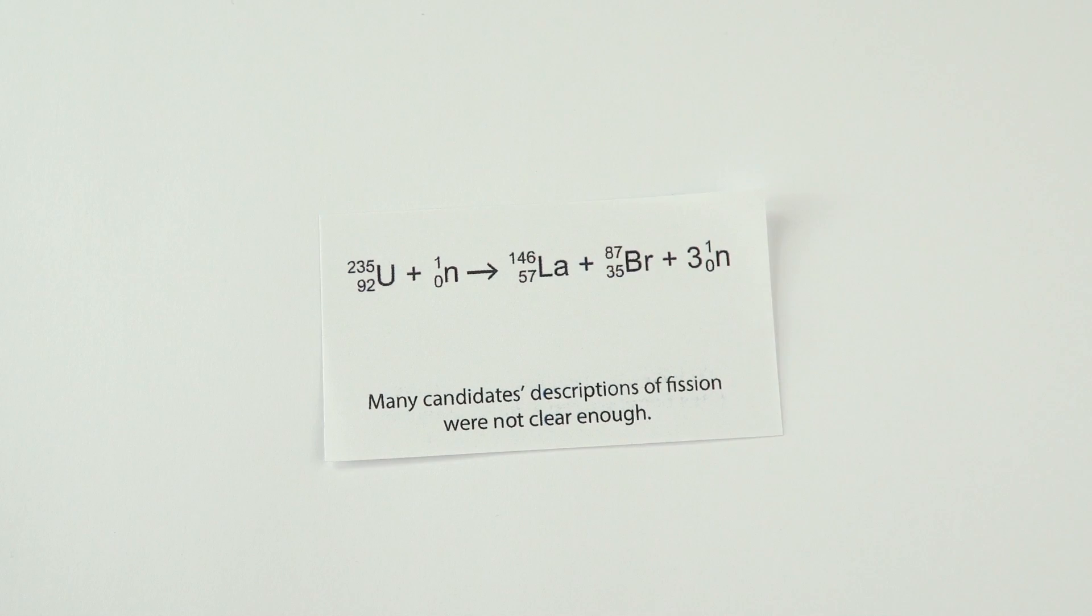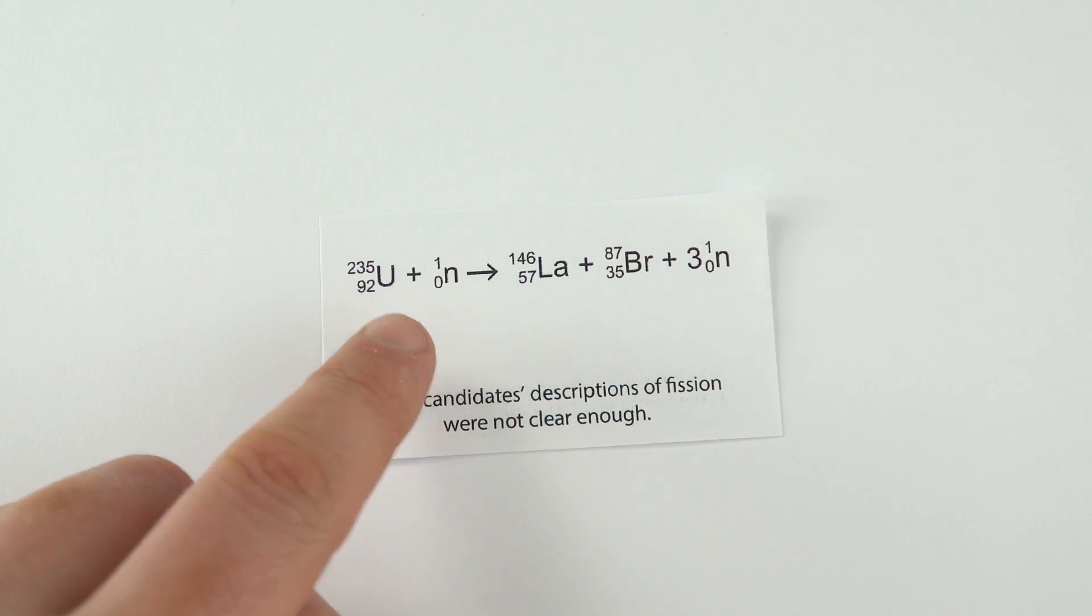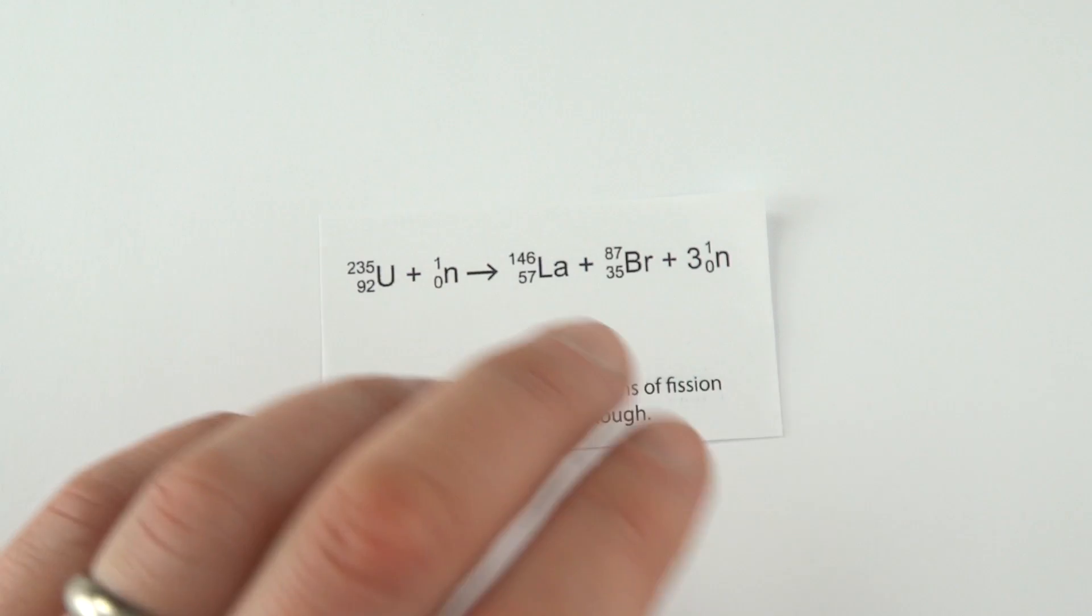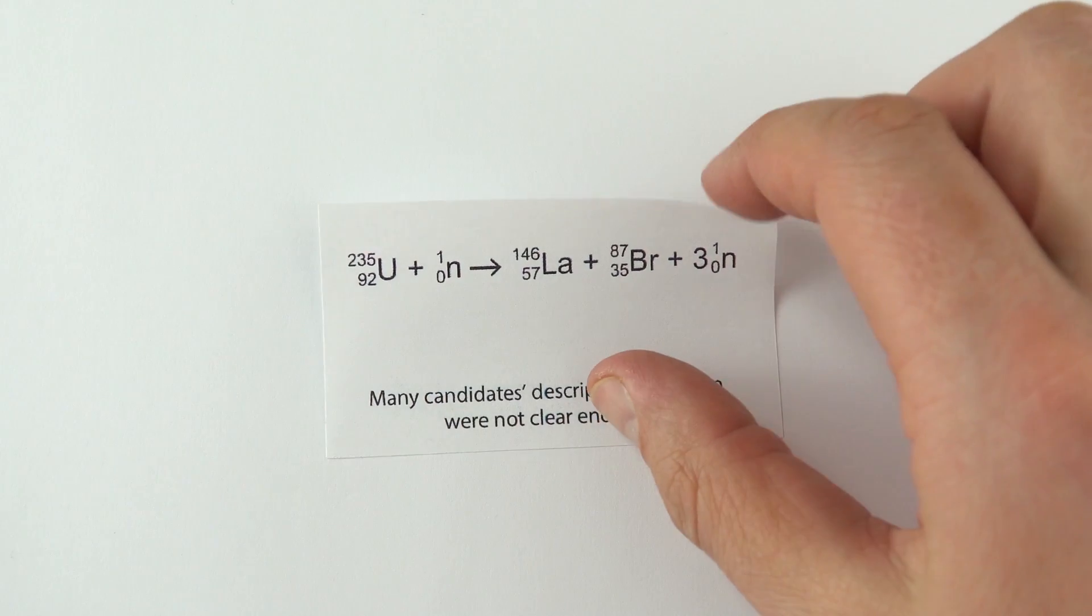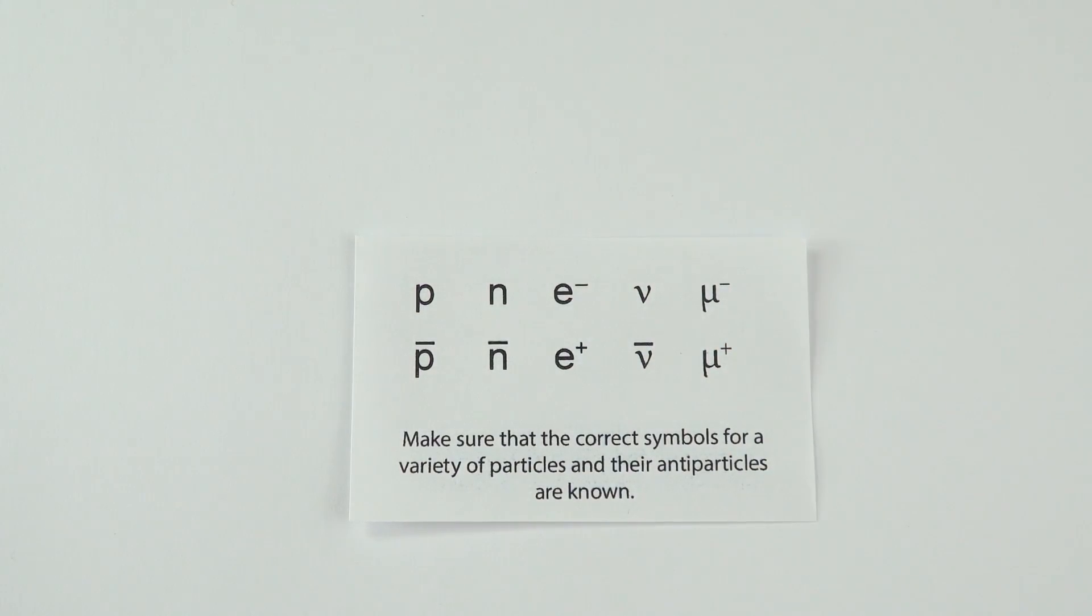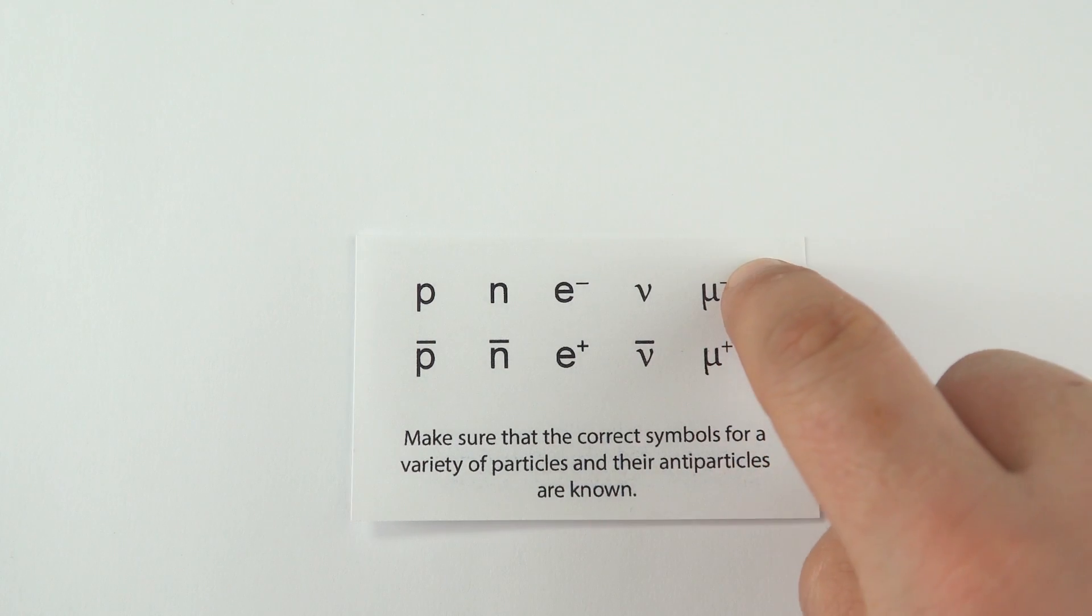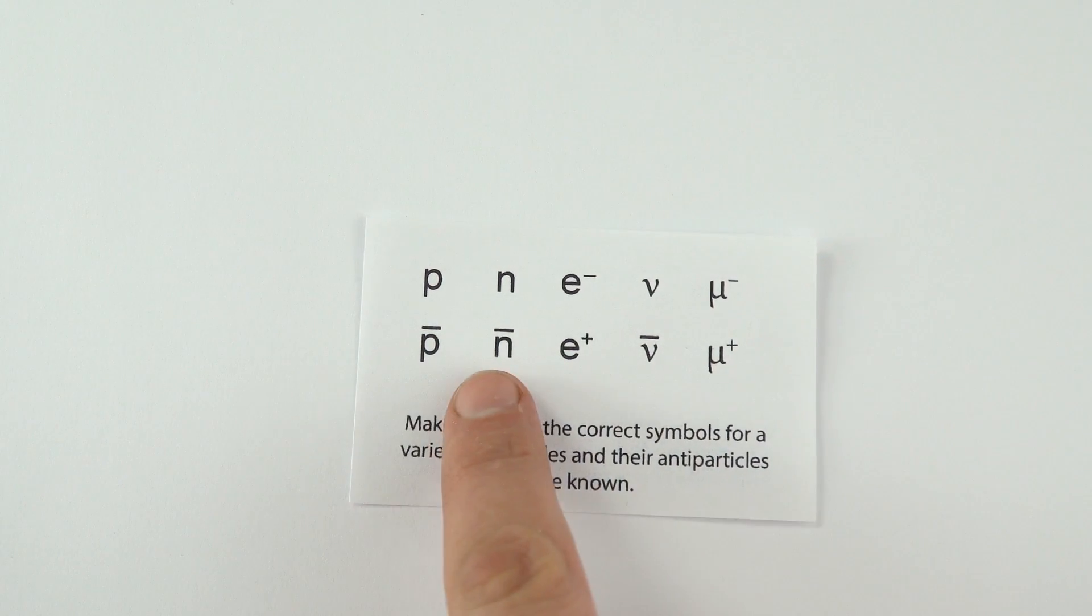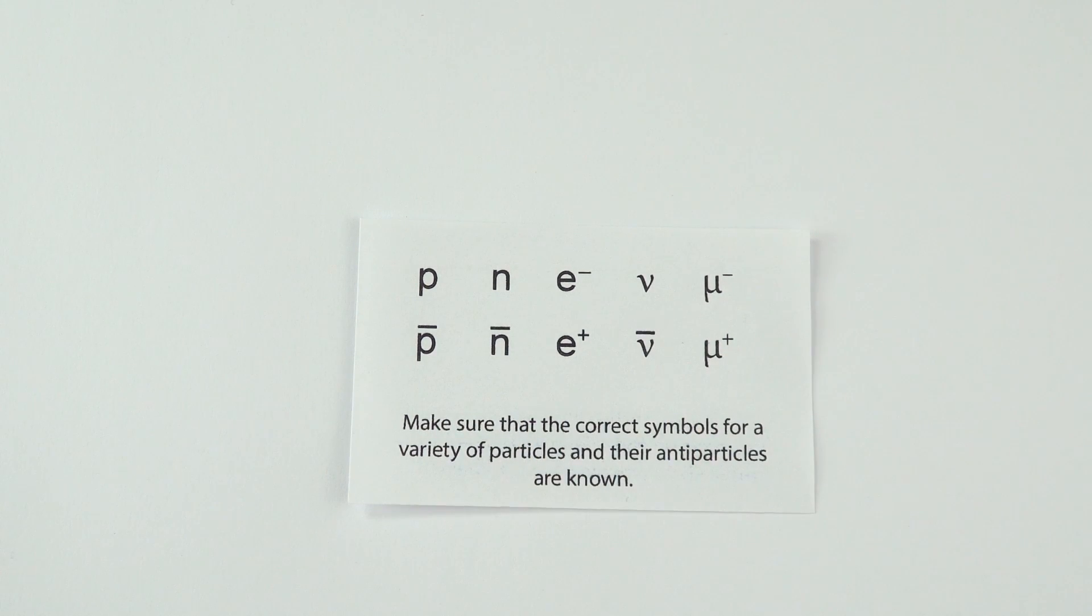The next thing it said was that last year, a lot of people were not describing fission clearly enough. Maybe thinking about the equation that might be given to you, but also describing how the nucleus absorbs a neutron. It then splits into two roughly equal-sized parts and gives out two to three further high-speed neutrons. Be very clear about the language you're using for fission. Also, just be very clear about drawing your symbols for different particles really clearly. So your protons, your electrons, your neutrinos, your muons. And also make sure if they are either a normal kind of particle or some antimatter, where you've got either a bar over the top or a plus sign if you've got these positrons and positive muons.